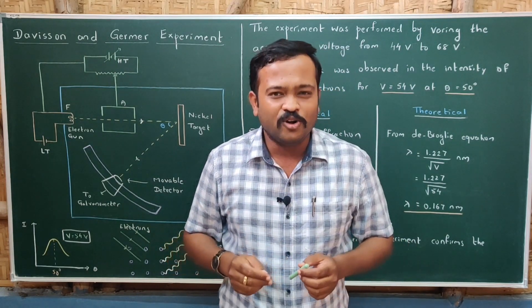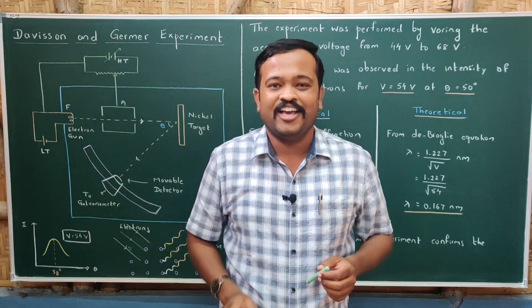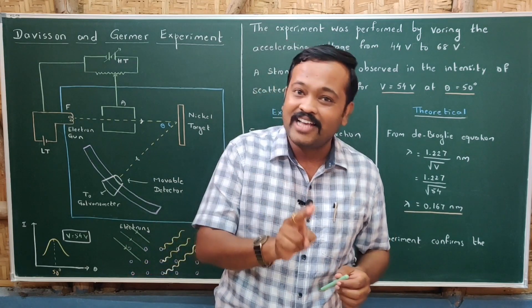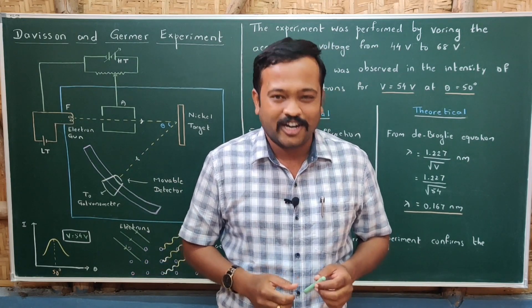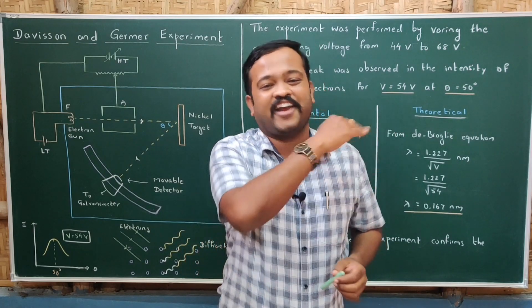Waves undergo properties like interference and diffraction. In order to prove electrons as waves, electrons must also undergo properties like interference and diffraction.